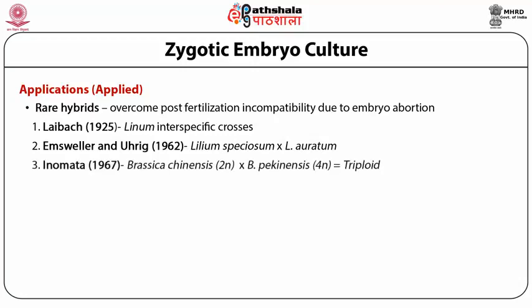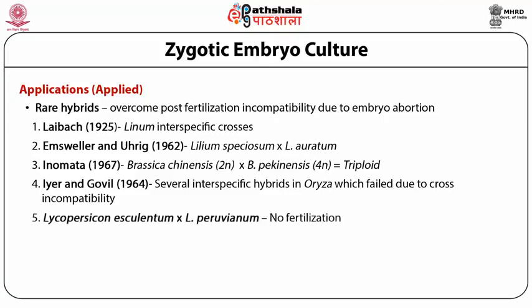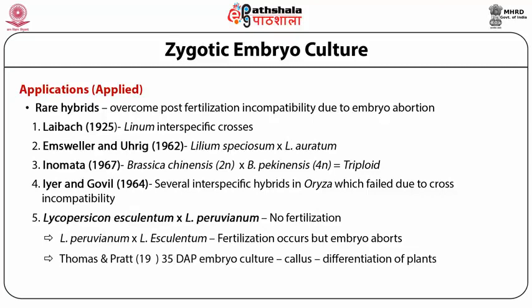In another example, Omata crossed Brassica chinensis with Brassica pekinensis — also an incompatible cross due to post-zygotic incompatibility — and they were able to produce triploid hybrids. Ayer and Goyal have produced several interspecific hybrids in rice by embryo culture. In tomato, when Lycopersicum esculentum is crossed with Lycopersicum peruvanum there is no fertilization. But in the reciprocal cross, where peruvanum is taken as the female parent and crossed with esculentum, fertilization occurs but the embryo aborts prematurely. Thoman and Pratt excised the embryo 35 days after pollination, and instead of developing directly into a plant, it calloused.